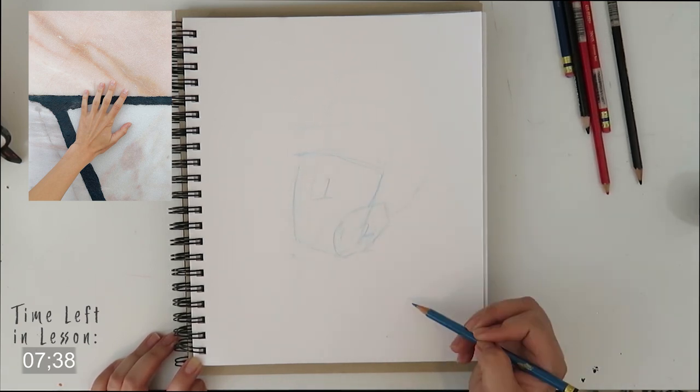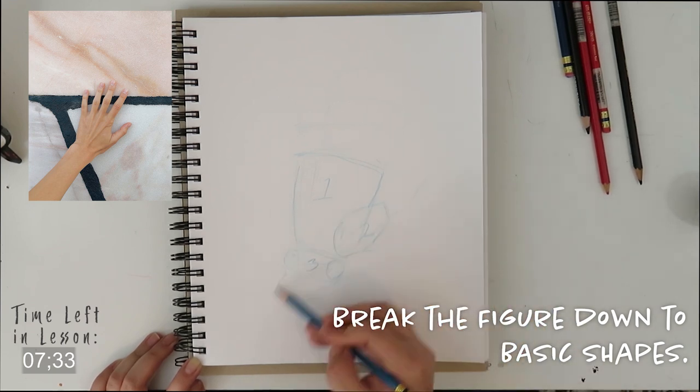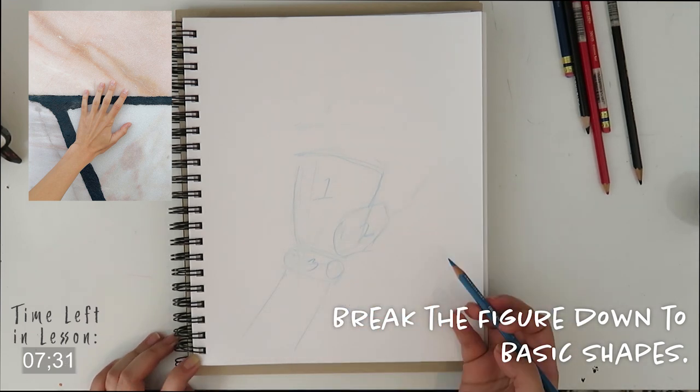Next we will break down the figure of the hand down to its basic shapes. Numbers 1, 2, and 3, or the palm and the wrist, will always be the biggest shapes of the hand.